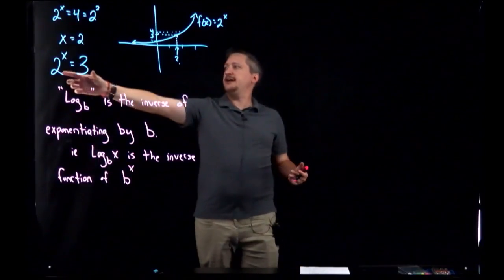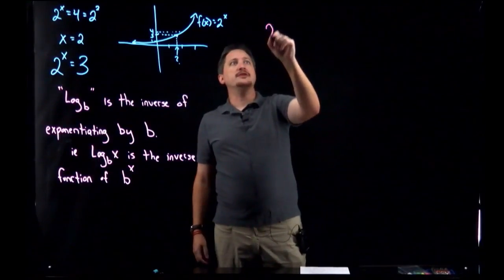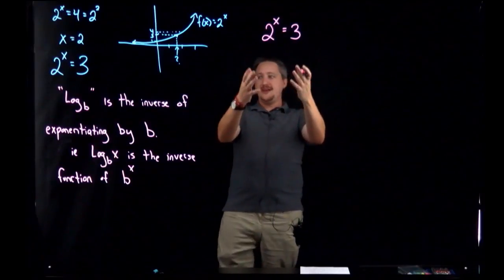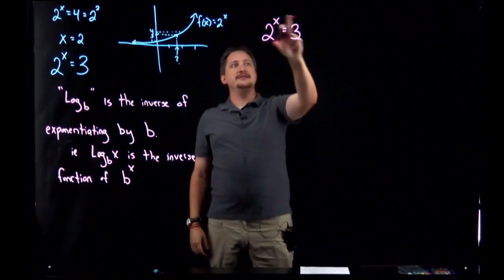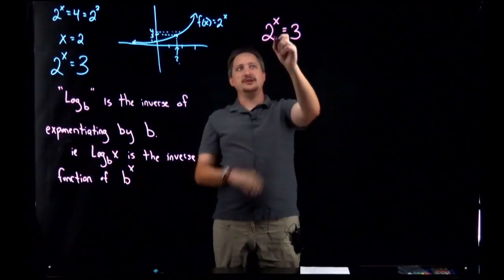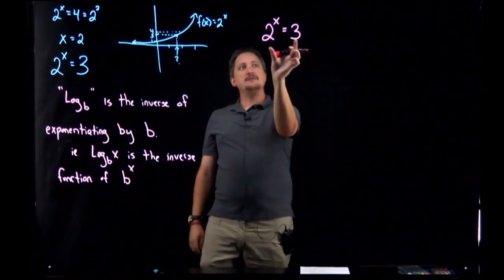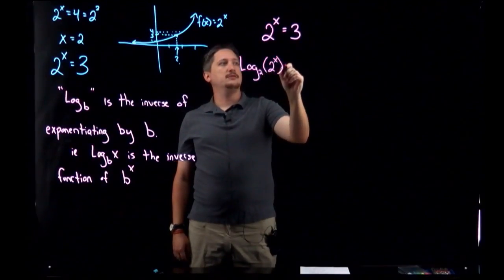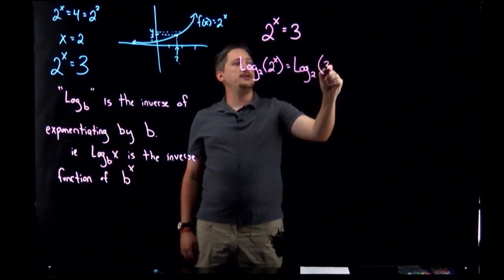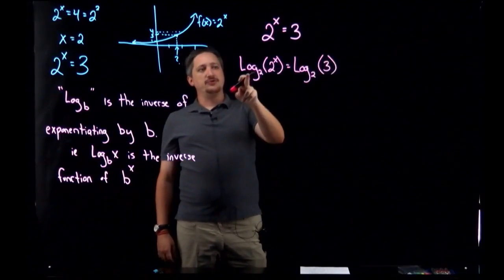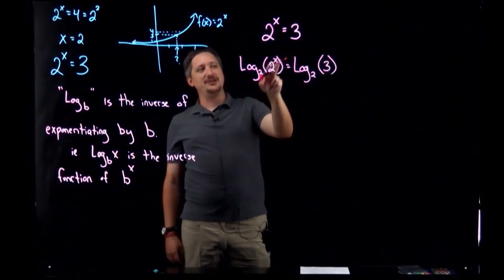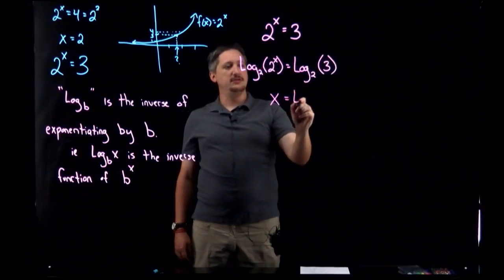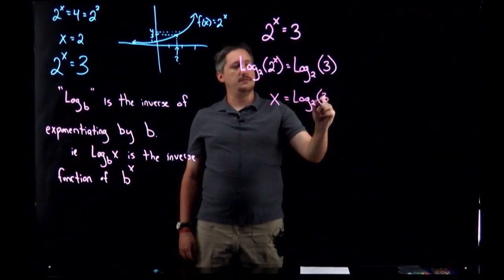In particular, if we had 2^x = 3, what this inverse function is saying is if we take log base 2 of both sides - because my b is 2 - I have log base 2 of 2^x equals log base 2 of 3. And because they're inverse functions, log base 2 and exponentiation by 2, these things undo each other, leaving me just the exponent, meaning that I get x = log₂(3).